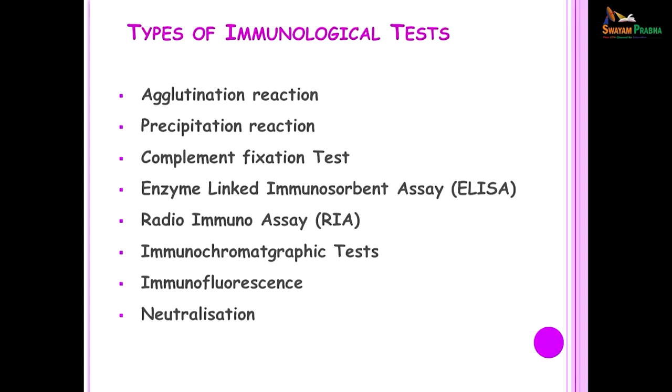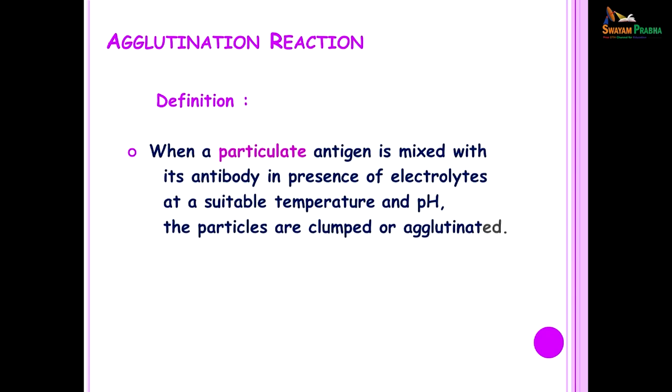Now let us look at the types of immunological tests. Some of them you need to know because you need to know the principles of the reactions, how they occur, and how long they take to perform. In addition, these are the tests which will help you later on when you become clinicians — you need to know which test to order for which particular diseases. We will start with the agglutination reaction.